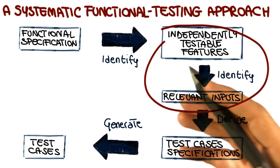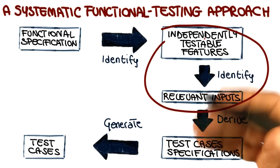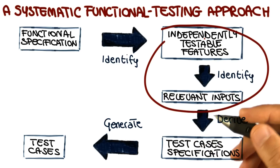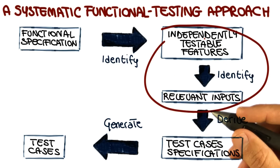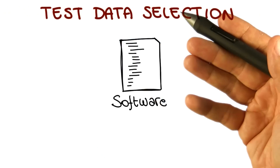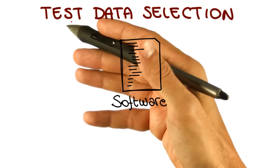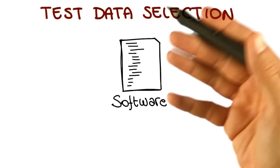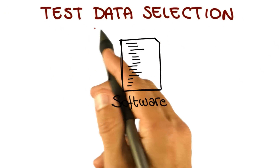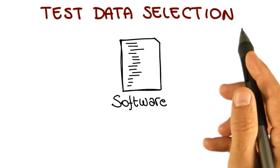In addition, I will point you to other sources in the class notes where you can look at different ways of doing this. The problem of identifying relevant inputs for some software, or some feature of it, is called test data selection.